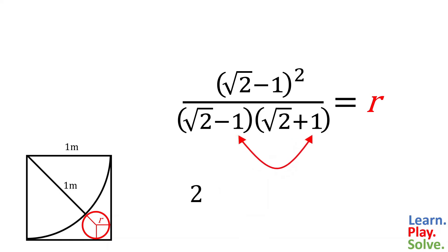And then, negative 1 times positive 1 is negative 1. 2 minus 1 is 1, so the denominator is 1.